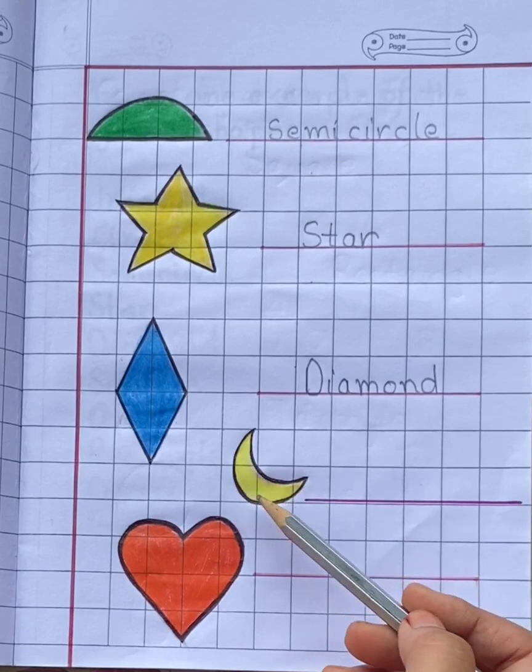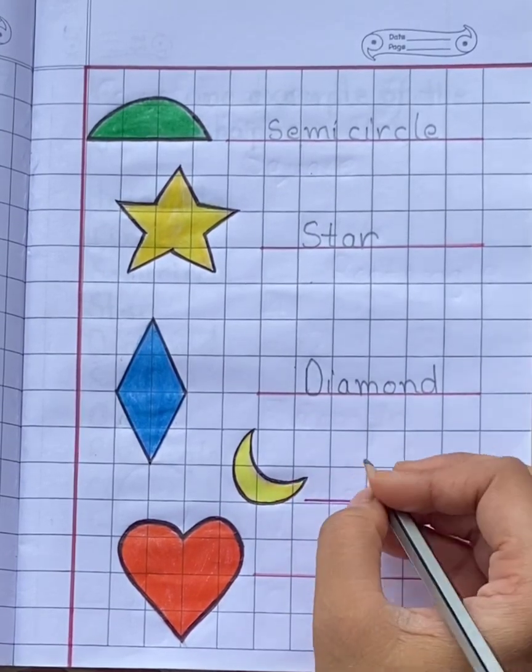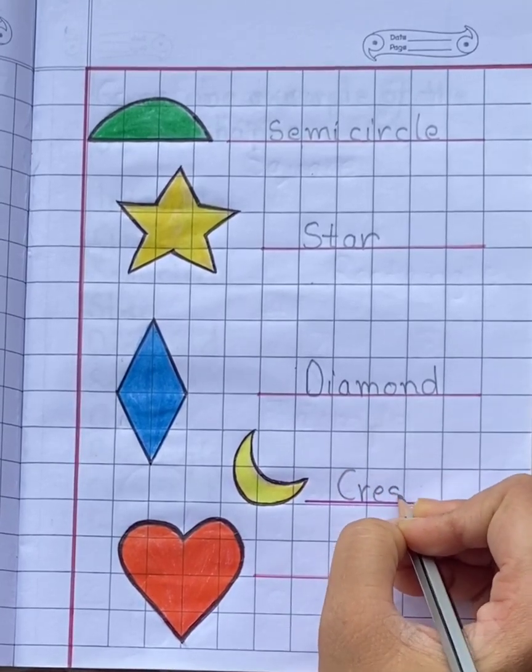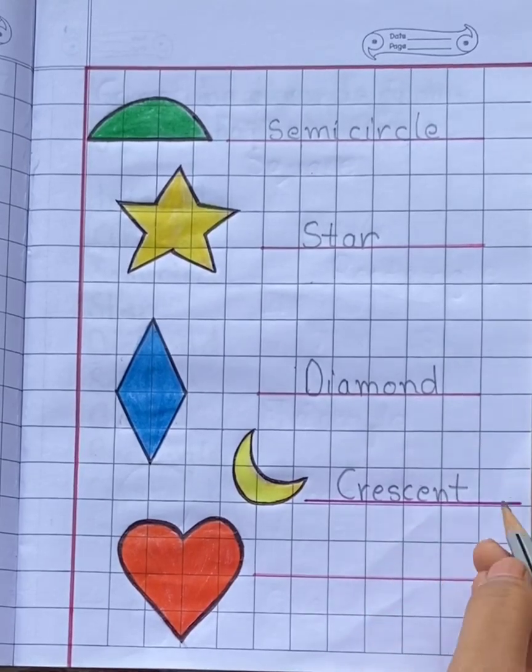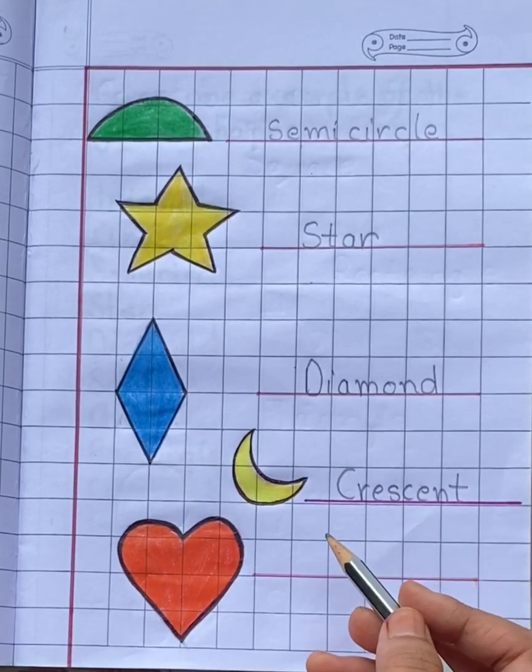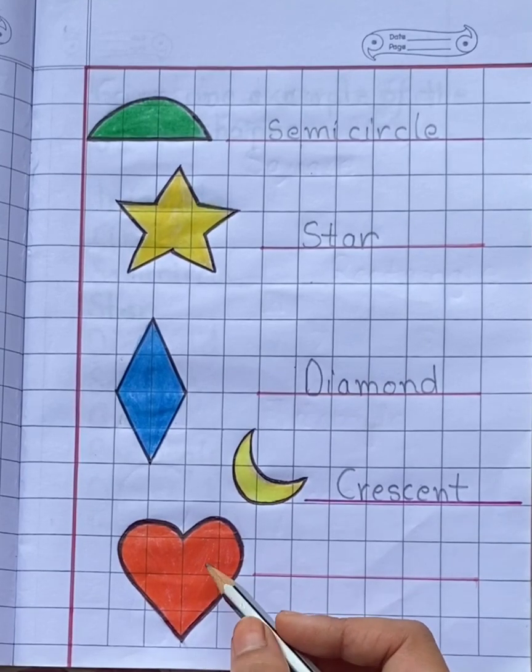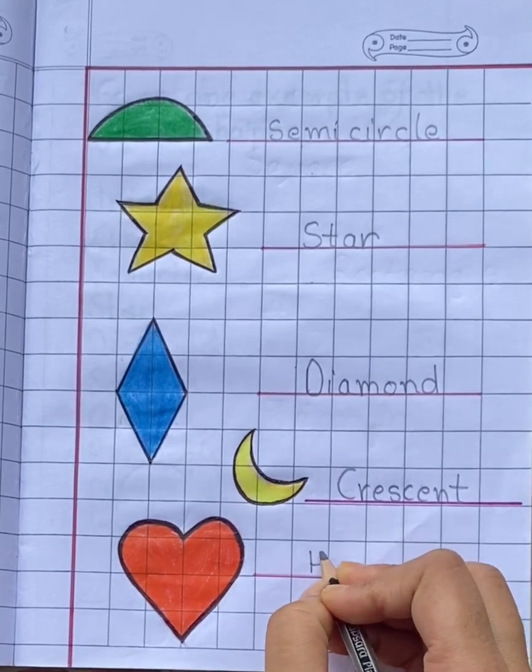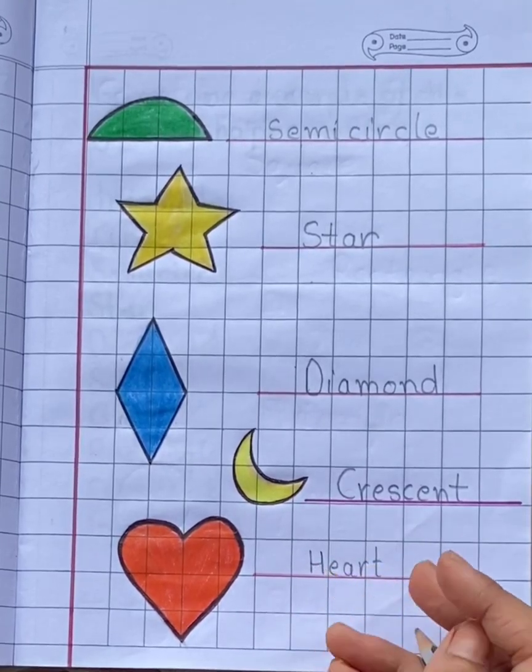Crescent. This shape is called crescent. C-R-E-S-C-E-N-T. Next shape is heart. This is heart shape. H-E-A-R-T.